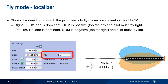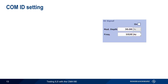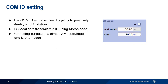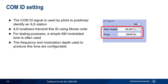Note that fly mode on the CMA is really more of an indication than a configuration parameter. The COM ID signal is used by pilots to ensure they're tuned to the proper localizer. Localizer arrays transmit this ID signal as Morse code, but for testing purposes a simple AM-modulated tone is often used instead. The frequency of this tone and the modulation depth can also be configured. Enabling the ID signal will cause this tone to be heard when the ILS receiver is tuned to the signal frequency.